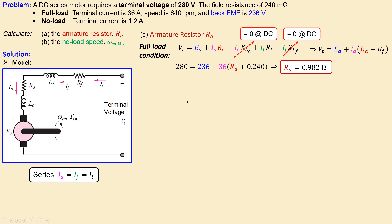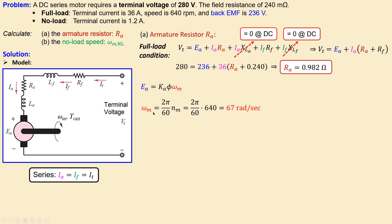We also need the motor constant, which will be useful for question B. The motor constant relates the back EMF to the rotation speed of the motor. The full-load speed is 640 rpm, which we convert to 67 radians per second. Substituting the full-load back EMF of 236 volts, we get the motor constant K equal to 3.52 webers.